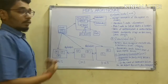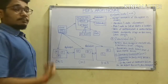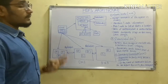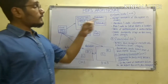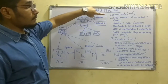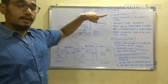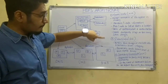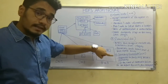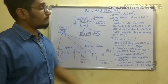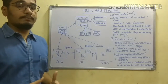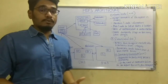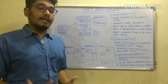Now let us move on to the three main parts of HDFS. First, you have the Name Node (NN). Next, you have the Data Node. And third is the Secondary Name Node (SNN).